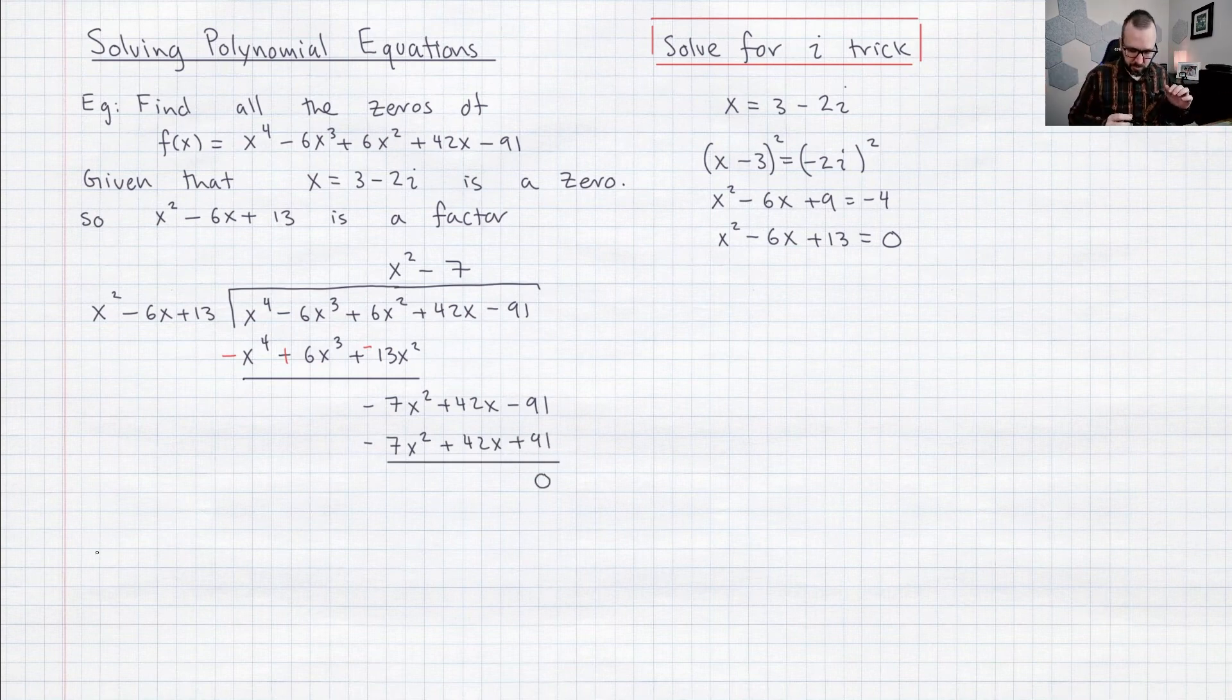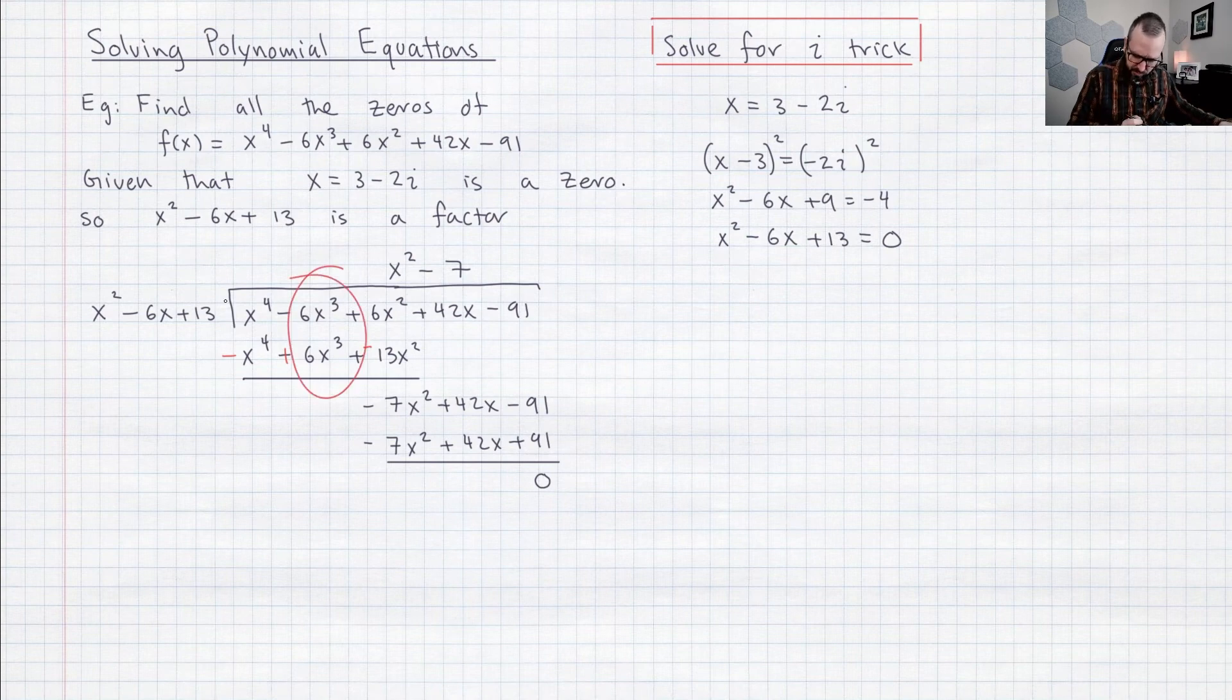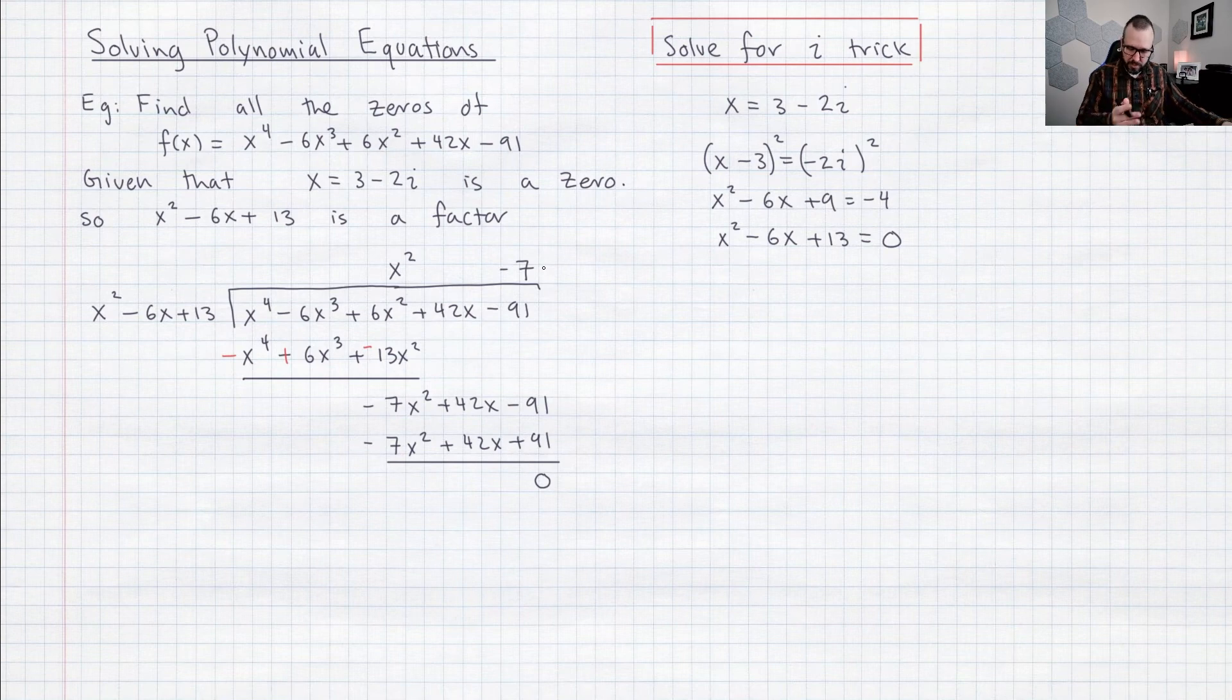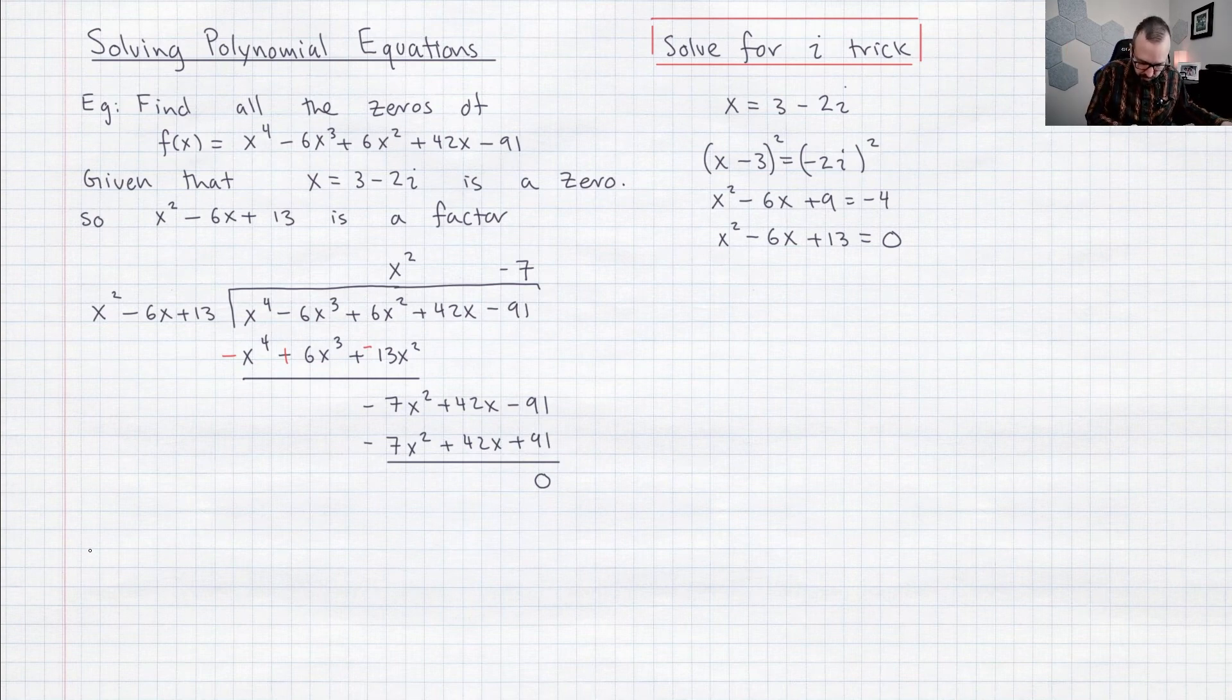Yay I did it so I did the long division it was kind of interesting because all of the x cubed terms cancel so we got to skip one of the steps. I ended up with a really really simple quotient. So now we just need to solve x squared minus seven equals zero.